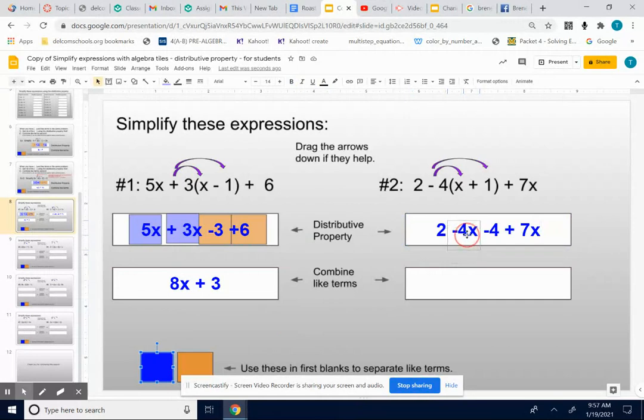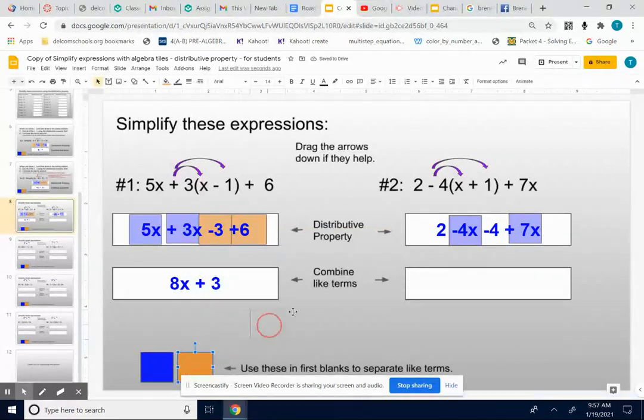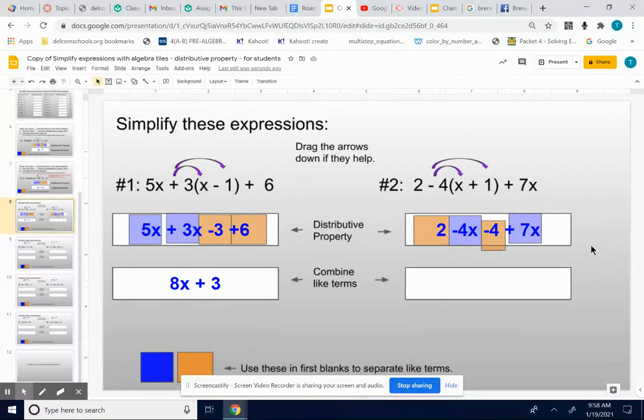I'm going to cover up my x terms in purple and I'm going to cover up my regular numbers in orange, because I want to combine my like terms together. When I combine my x's together, I have a negative 4x added to a positive 7x. Always look at the signs in front of things.